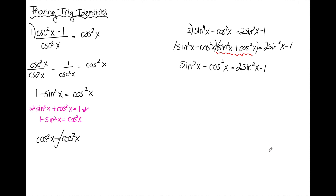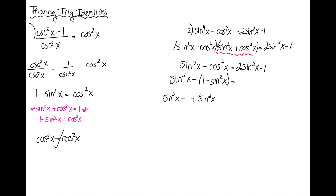Sine squared x plus cosine squared x equals 1, so that factor just goes away because I'm multiplying by 1. All I have left is sine squared x minus cosine squared x equals 2 sine squared x minus 1. I'm going to get this entirely in terms of sine by replacing cosine squared with 1 minus sine squared using the Pythagorean identity. Distributing the negative sign gives minus 1 plus sine squared, so I have 2 sine squared x minus 1 equals 2 sine squared x minus 1.